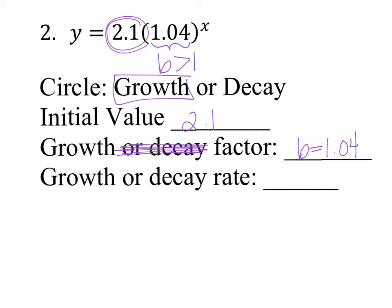My growth rate: rate equals b minus 1. So r equals 1.04 minus 1, which equals 0.04. And that's my rate.